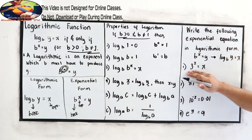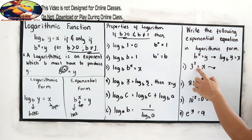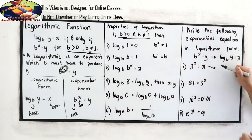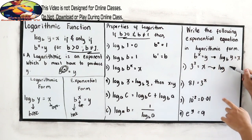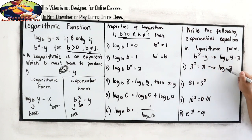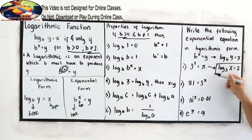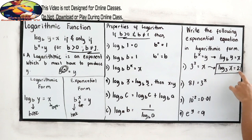Let's try number 1: 3 squared is equal to x. We write log — our y value is x — base 3, is equal to the exponent 2. So the logarithmic form is log x base 3 is equal to 2.